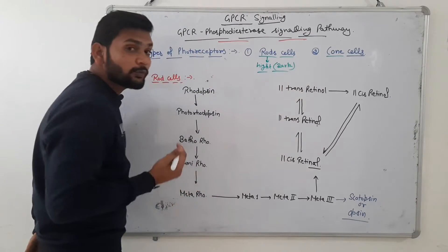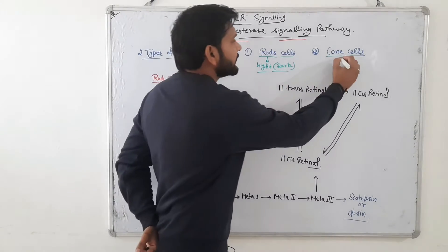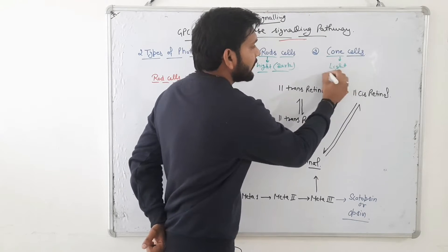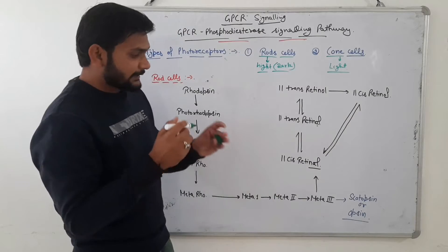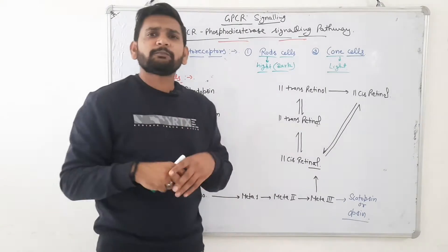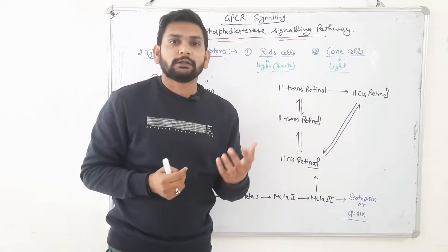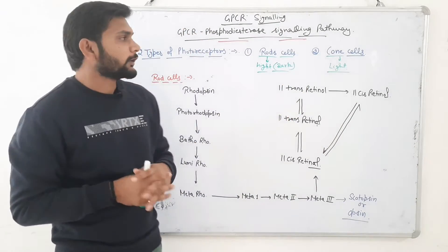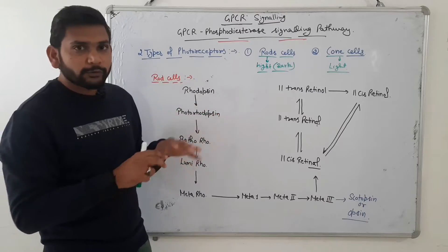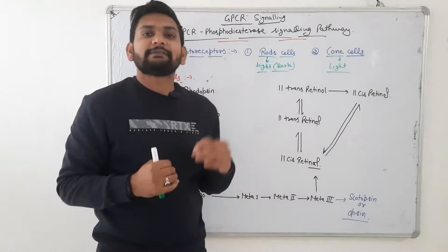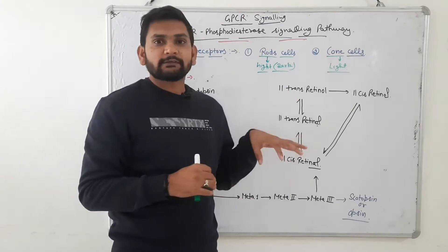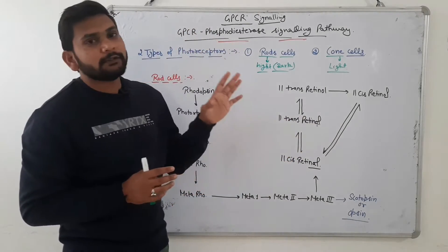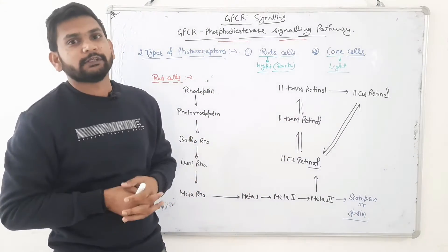Cone cells are activated in the light — when high light comes, cone cells are activated, and there are different types of signaling pathways that occur in cone cells. Today we are going to discuss just the basic things, and upcoming lectures will cover the phosphodiesterase signaling pathway in more detail.